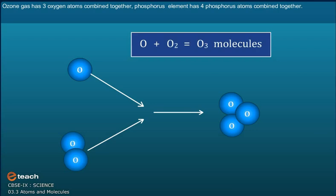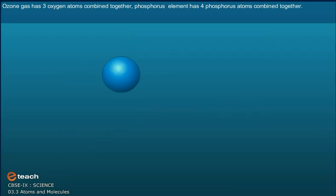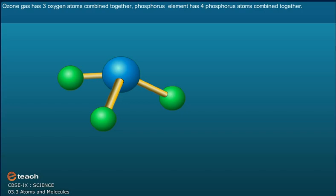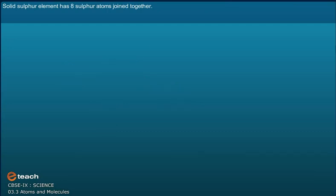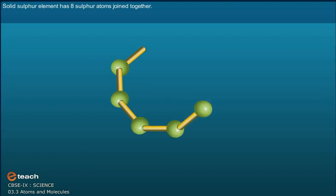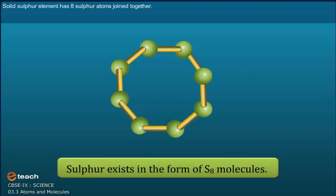Phosphorus element has four phosphorus atoms combined together, so phosphorus exists in the form of P4 molecules. Solid sulfur element has eight sulfur atoms joined together; therefore, sulfur exists in the form of S8 molecules.